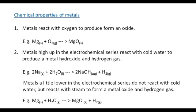Chemical properties of metals. Metals react with oxygen to produce an oxide. For example, magnesium plus oxygen produces MgO, or magnesium oxide.